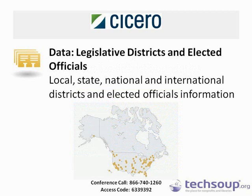Another aspect of Cicero is the actual data in our database. The Cicero collection of data is huge and growing. We are adding additional locales and new types of information every day. The first major type of information is legislative districts. We have a large collection of spatial, map-based data describing legislative district boundaries. We have local legislative boundaries for 100 of the most populous cities in the U.S., including city councils, county councils, and supervisorial districts. We have full coverage for state legislative districts in Canada as well as the United States and Australia. We have federal-level data for the U.S., Canada, Australia, New Zealand, and the U.K.